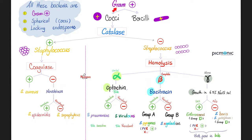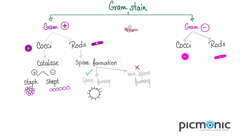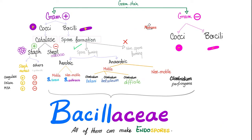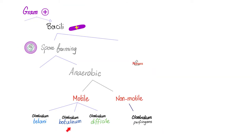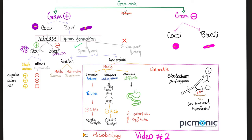Clostridium botulinum is a gram-positive bacillus. It is spore-forming, anaerobic, yet motile. Damaged tuna cans and spores in honey, wound infection or inhalation — these give you the botulinum toxin, which inhibits the release of acetylcholine by cleaving and breaking down the snare protein responsible for acetylcholine release. That's why you get flaccid paralysis, such as floppy baby syndrome.